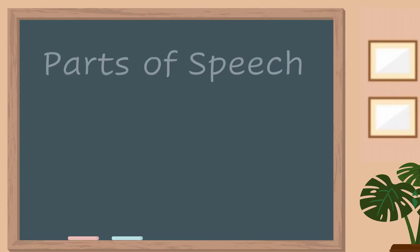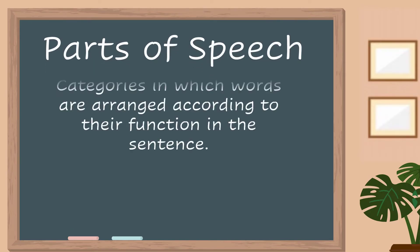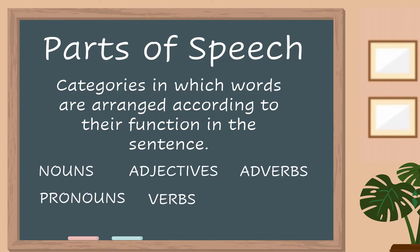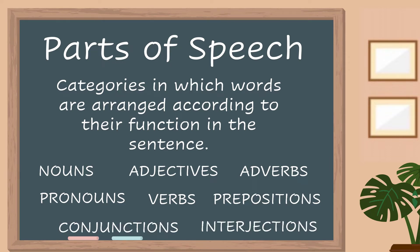We call parts of speech the different categories in which words are arranged according to their function in the sentence. There are eight basic parts of speech: nouns, pronouns, adjectives, verbs, adverbs, prepositions, conjunctions, and interjections. Let's go through each one to know their function.